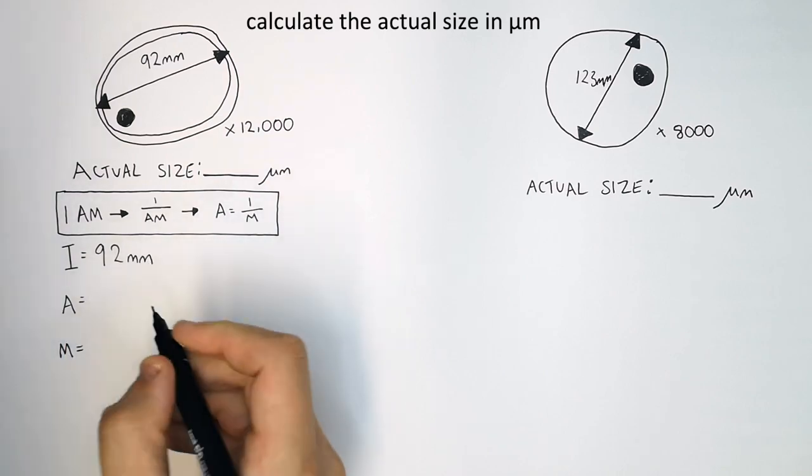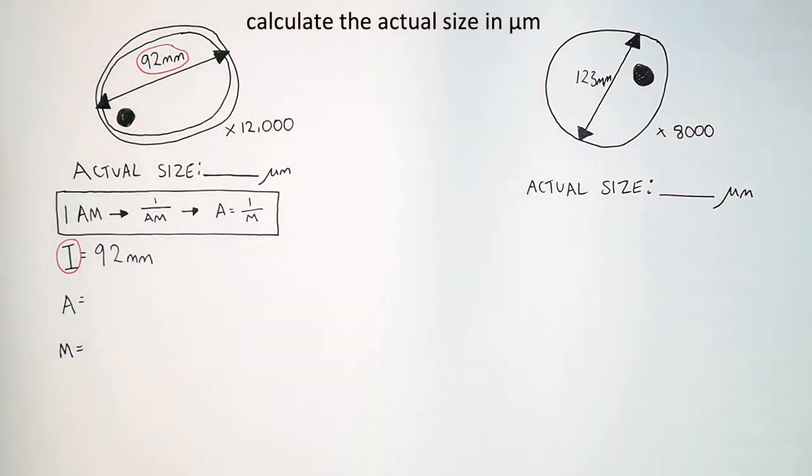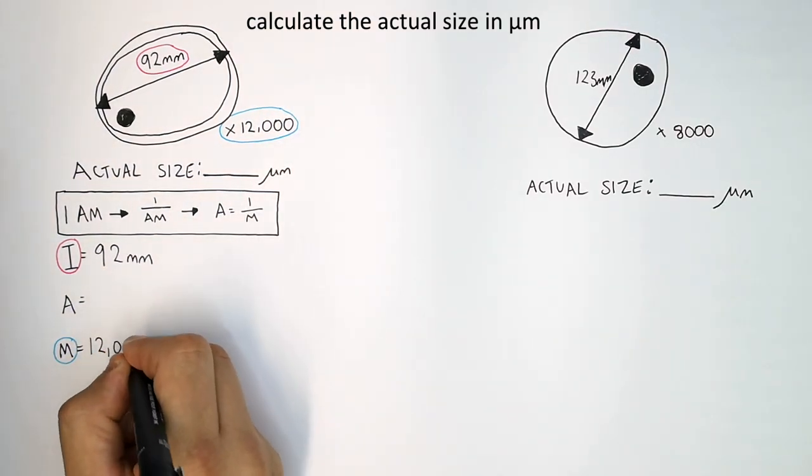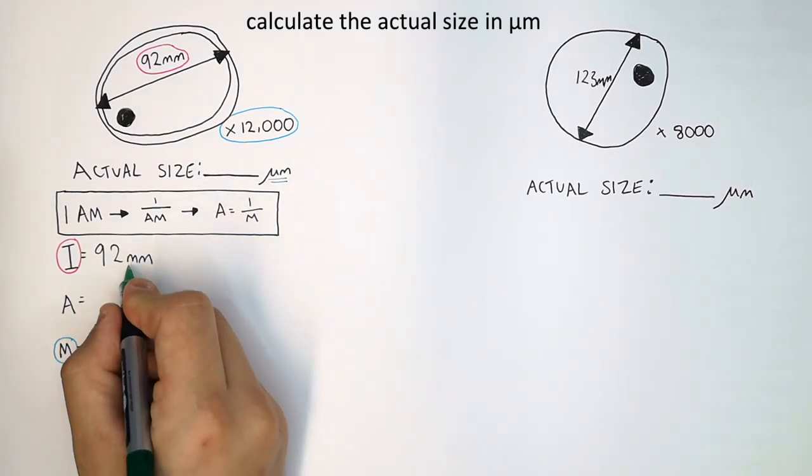I is the image size, 92 millimeters. You can see you've got that there. Then you've got the magnification, which is times 12,000 magnification. We're trying to work out A in micrometers, but we have the image size in millimeters.